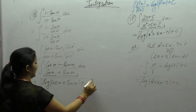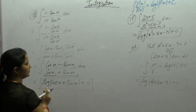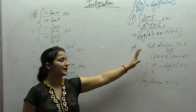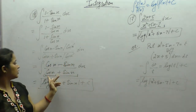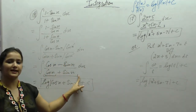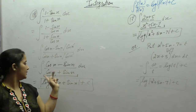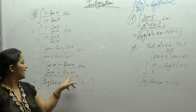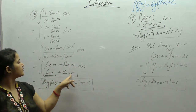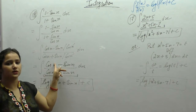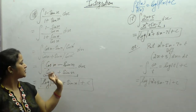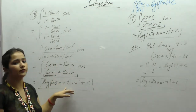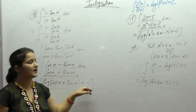We apply the formula f'(x)/f(x) = log|f(x)|, giving log|cosx + sinx| + C. Alternatively, put the denominator cosx + sinx as t, differentiate, and get the same result: log|cosx + sinx| + C.